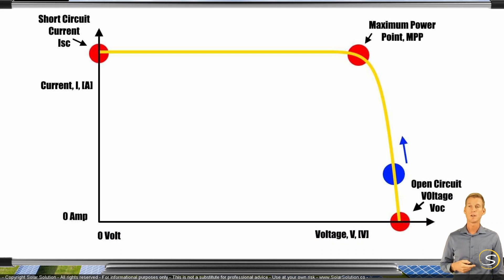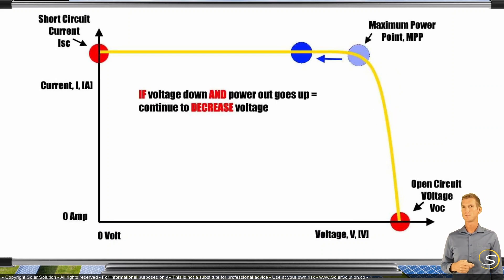So the MPPT solar charge controller will continue to do this. It will continue to reduce the voltage. And then you'll follow this line up towards the maximum power point. So the voltage reduces, the amperage increases, and as a result, the power output from the panel also increases.